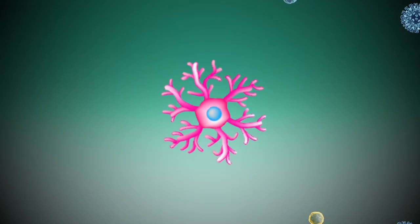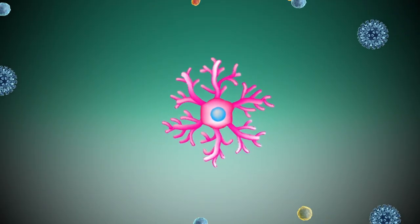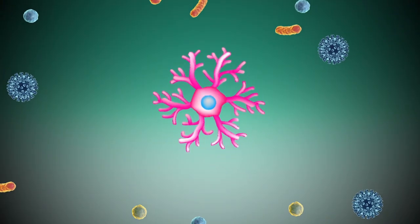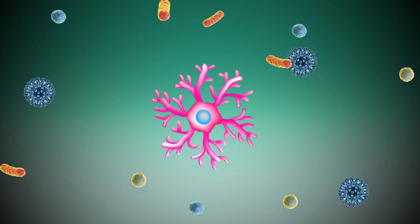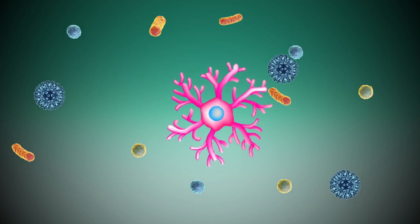Microglia are the resident macrophages in the CNS. Using long branching processes, microglia actively survey their surroundings and can rapidly respond to immune threats.